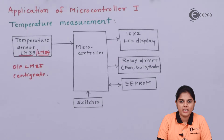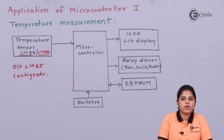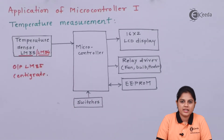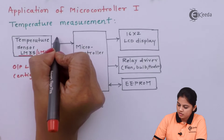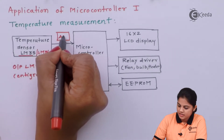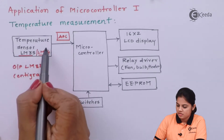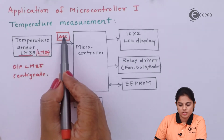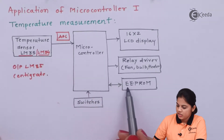Interfacing is required to change the analog data into digital form. The ADC within a microcontroller can be used to convert data from analog to digital form, or an external ADC can be connected. If the internal ADC is not available, you can use an external ADC so that whatever value is measured by the sensor can be converted into digital form and given to the microcontroller.